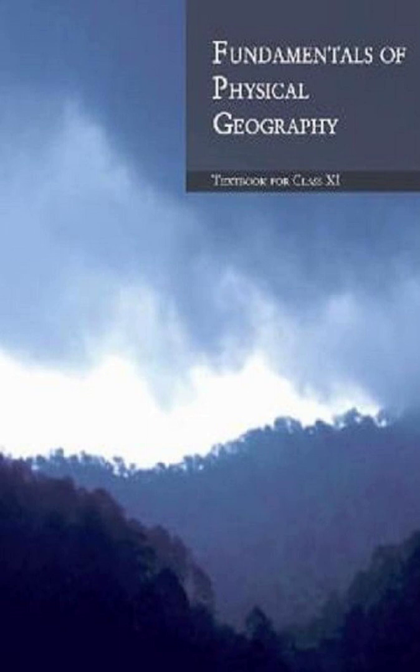Evidence in support of continental drift: The matching of continents — Jigsaw Fit. The shorelines of Africa and South America facing each other have a remarkable and unmistakable match. The map produced using a computer program to find the best fit of the Atlantic margin was presented by Bullard in 1964. It proved to be quite perfect. The match was tried at the 1,000 fathom line instead of the present shoreline.